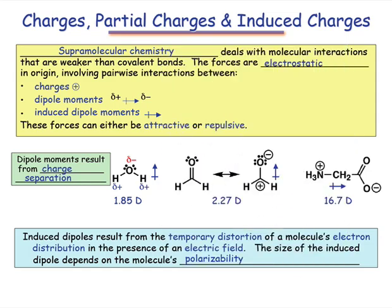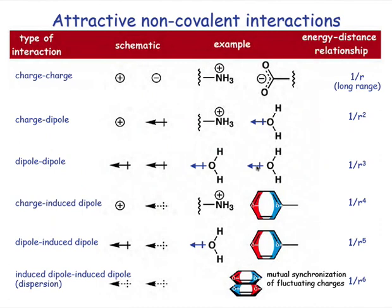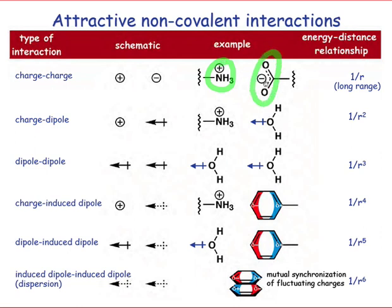Thinking of all the possible combinations of charges, induced dipoles, and dipoles, we can imagine a variety of non-covalent interactions that could possibly exist. Charge-charge interactions you're probably very familiar with as being simply ionic bonds, and these can occur between groups such as an ammonium group and a carboxylate group. You see this often in enzymes, for instance. This is often called a salt bridge.